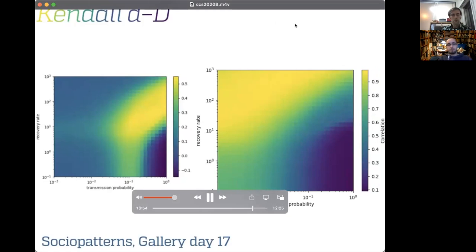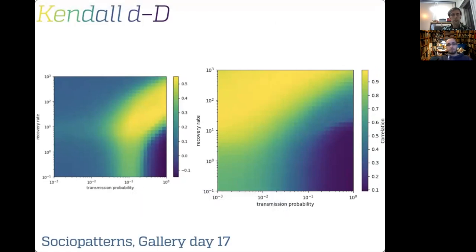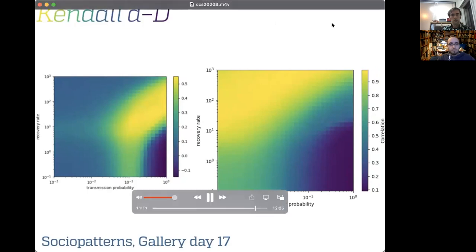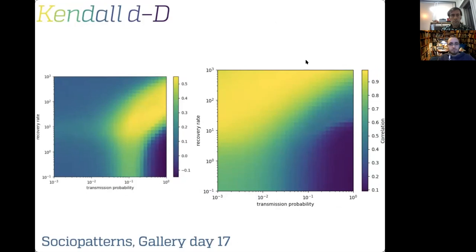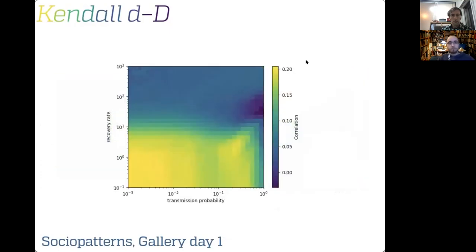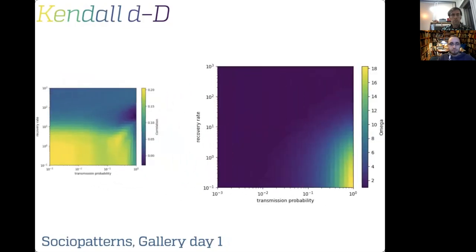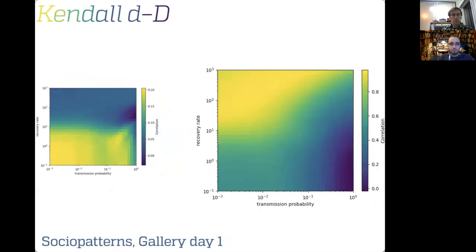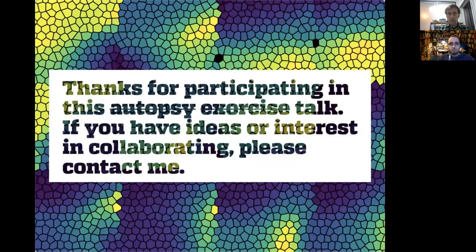Comparing instead the total number of contacts of each node — a lower-level importance measure — it shows higher correlation, which is a problem. The downstream reachability does show higher correlations. But for other days of the SocioPatterns gallery data and other datasets, things look even worse. In some cases the highest correlation is not in the region of intermediate outbreak sizes, and correlation with total number of contacts is higher. I won't continue boring you with these half-complete results.